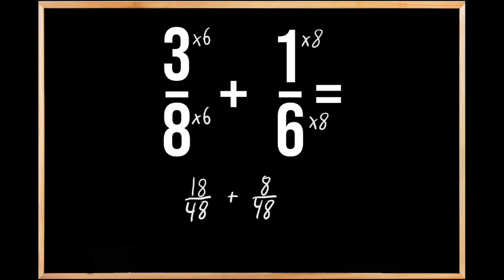Now that we've rewritten these fractions with a common denominator, we're ready to add them together. Our denominator's value is not going to change in the answer. It's still going to be 48, but we are going to add our numerators together. When we add 18 plus 8, we get 26 for the fraction of 26/48.